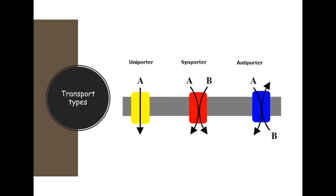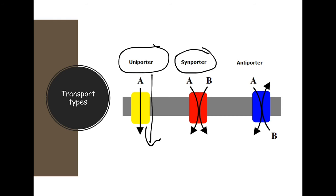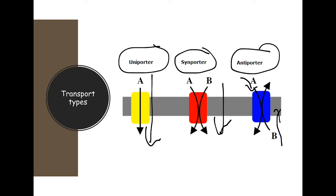When talking about movement of molecules through a membrane, it can happen by three different transport types: a uniporter, where molecules move in one direction; a symporter, where more than one molecule moves through in the same direction; and an antiporter, where two molecules move in opposite directions — one going in and one going out.